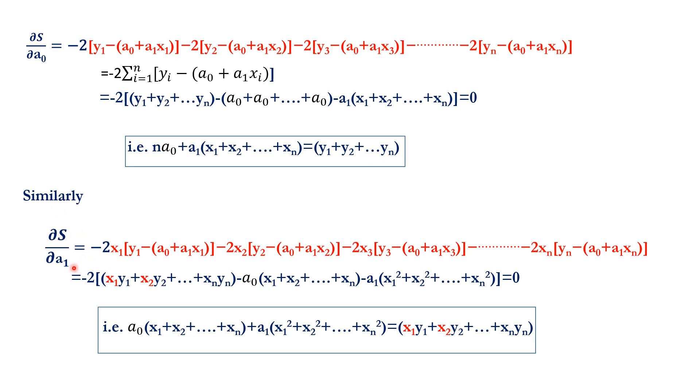Similarly, dS/da₁ is found. Here, the extra term added is this x₁, that is for the first term by differentiating with respect to a₁. It is minus 2x₁[y₁ - (a₀ + a₁x₁)], and like that. So, again, combining, we obtain...